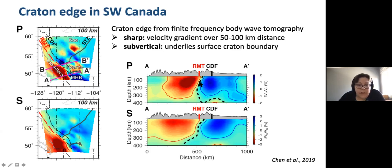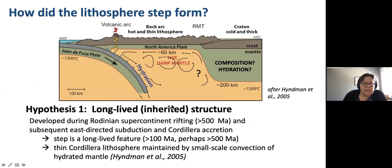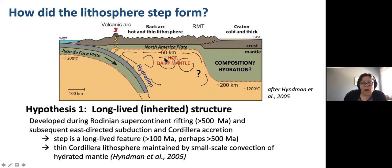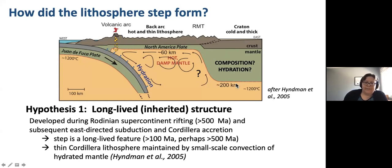With all of those geophysical observations, we can draw this schematic cross-section, originally proposed by Roy Hindman. We have Cordillera mantle with a lithosphere that's very thin, with a mantle underneath that's quite hot with some amount of water in it. And then we have a sharp transition below the Rocky Mountain Trench to the cratonic region. So we have this big step in lithosphere thickness. An obvious question is: how did this step actually form?